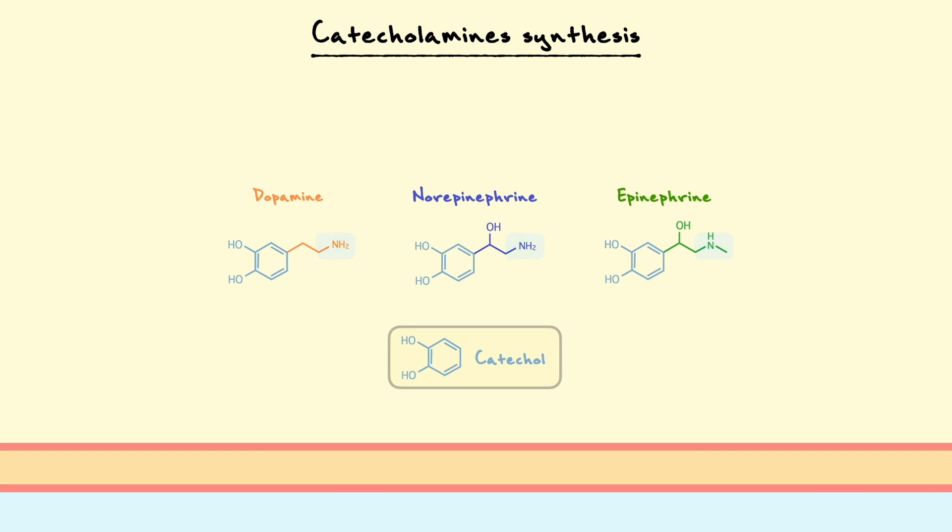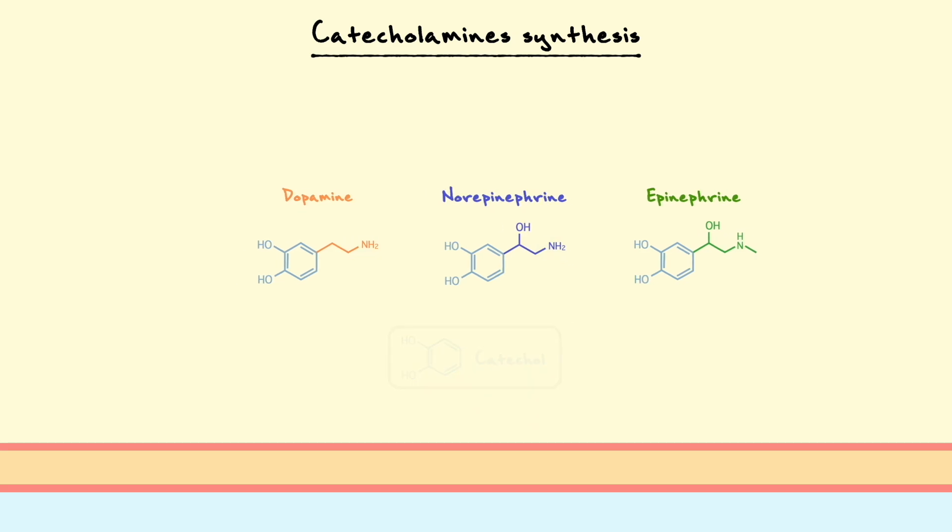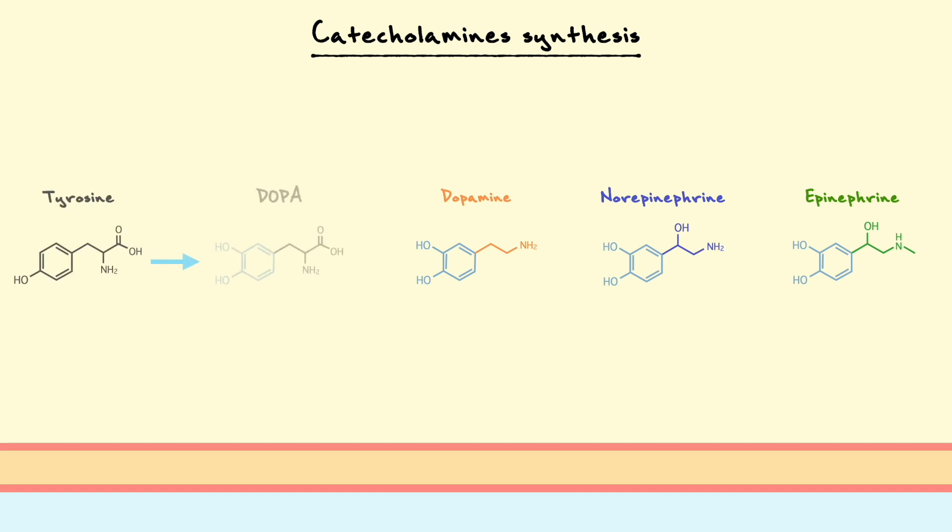As you might suspect from the high similarity in structure, the three neurotransmitters are synthesized from a common precursor. This synthesis, which occurs at the presynaptic terminal of the neuron, uses the essential amino acid tyrosine to make the three neurotransmitters in four steps. To cover the synthesis pathway, I'll first go over each reaction individually and then we'll come back to see the big picture.